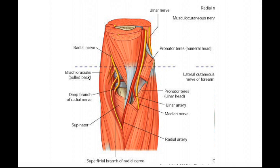Before it gets to that point, it does give off a couple of branches to some muscles — in particular brachioradialis, which you can see pulled back here, and also extensor carpi radialis longus. We follow this nerve, it gives off a couple muscular branches, and then it bifurcates into two separate nerves with very different functions — night and day. One is purely sensory, one is purely motor.